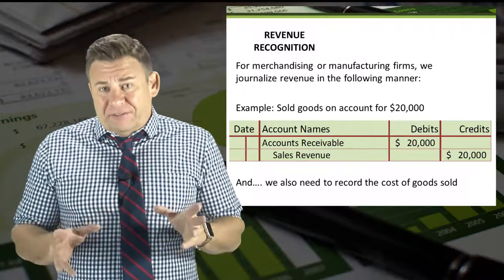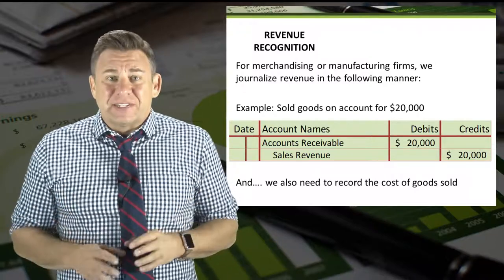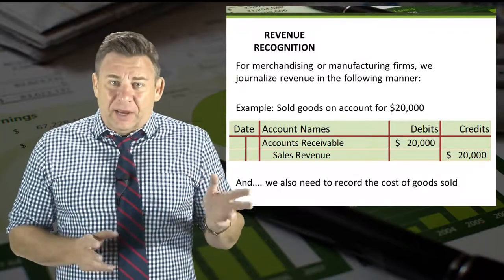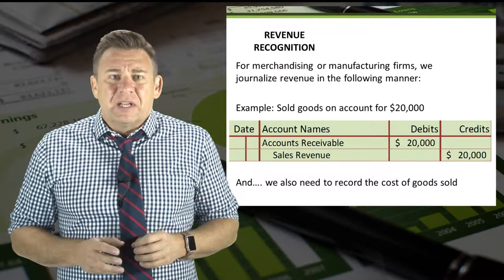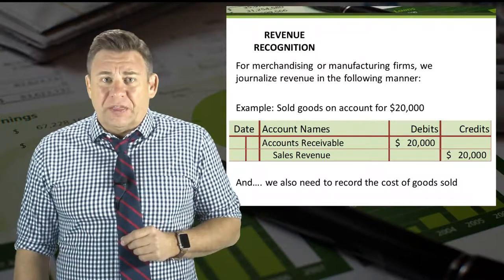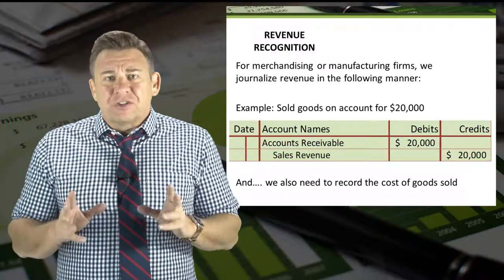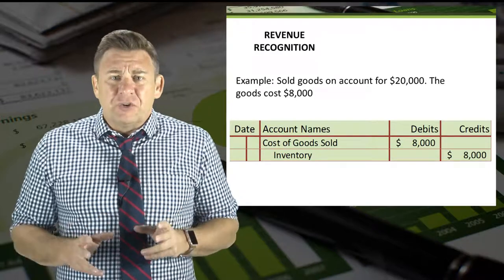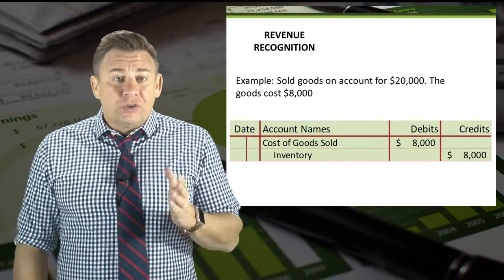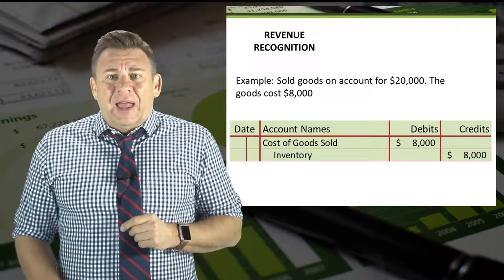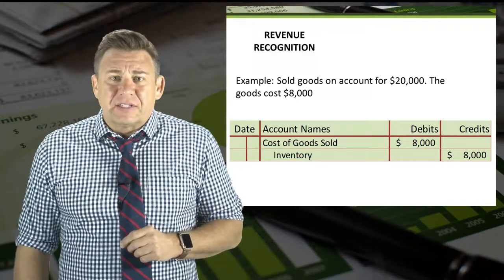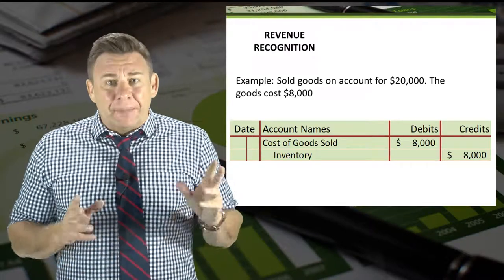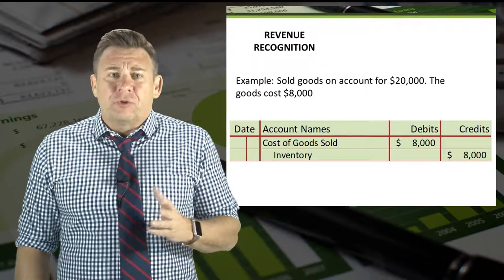For merchandising or manufacturing firms — meaning firms that sell goods rather than services — we record revenue by debiting accounts receivable, again it could be cash in some cases, and crediting sales revenue for $20,000. But that's only the first of the two journal entries needed when we sell goods. We also need to record the cost of goods sold, which is an expense account, and the reduction of inventory for the cost — not the price — of the goods sold. In this example, we debit cost of goods sold and credit inventory for $8,000.